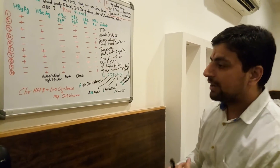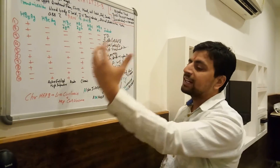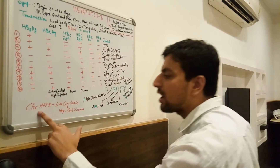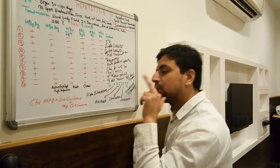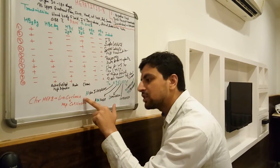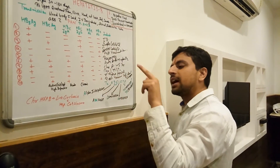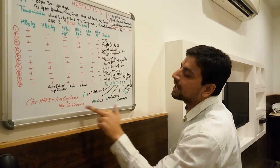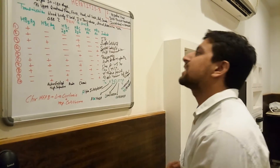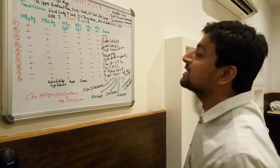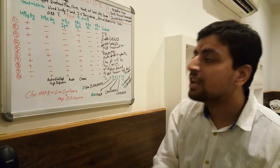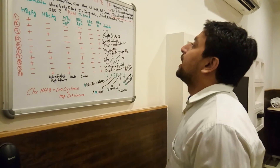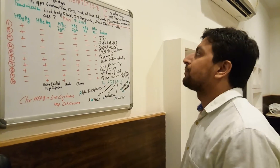As for complications — when Hepatitis B becomes chronic, it causes liver cirrhosis, which can progress to hepatocellular carcinoma. Hepatitis B never causes adenoma; it causes carcinoma.